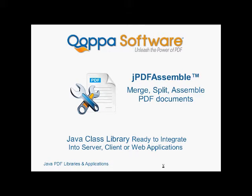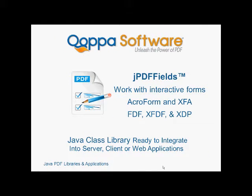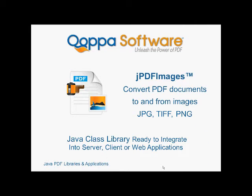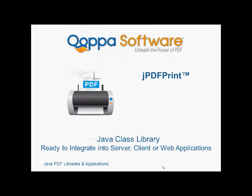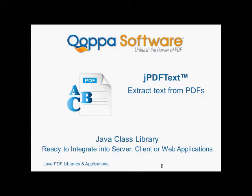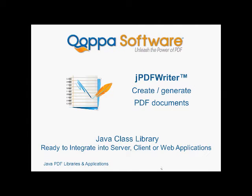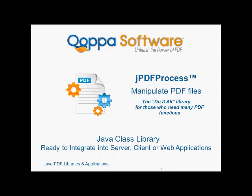To quickly introduce you to our libraries: JPDF Assemble to combine, merge, or split PDF documents. JPDF Fields to work with interactive PDF forms. JPDF Images to convert images into PDFs and PDFs to images. JPDF Print to print PDF documents. JPDF Secure to encrypt PDF documents and sign them digitally. JPDF Text to extract the text from PDF documents. JPDF Writer to generate PDF documents. Each library is focused on one type of function. JPDF Process, the do-it-all library, provides the functionality found in all of them.